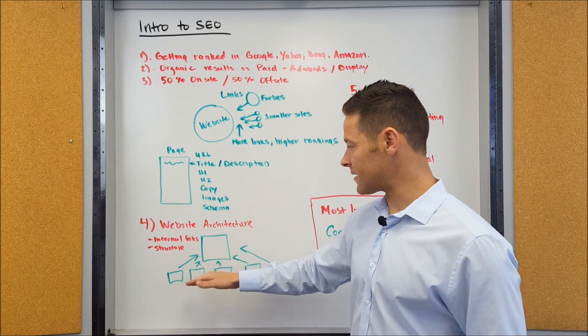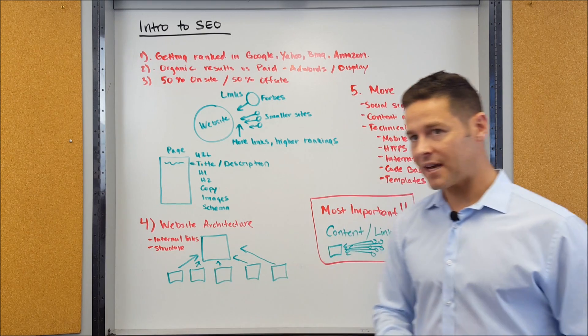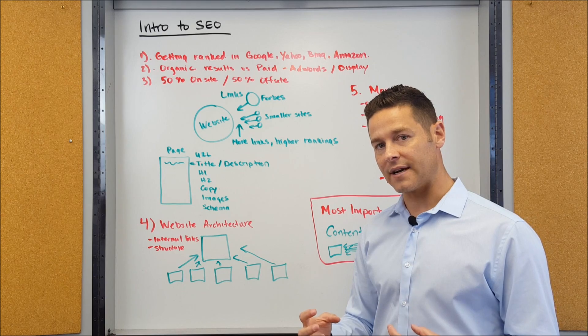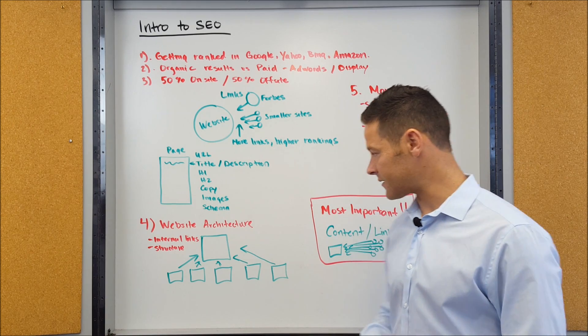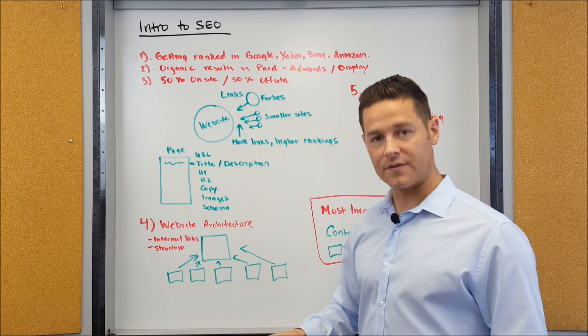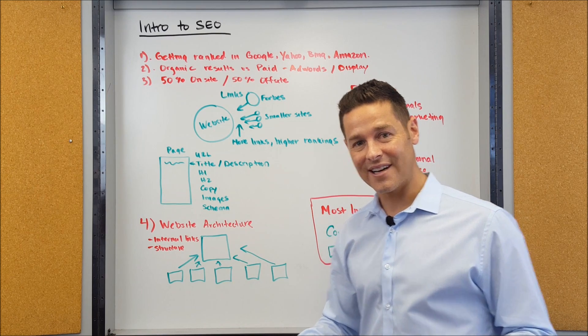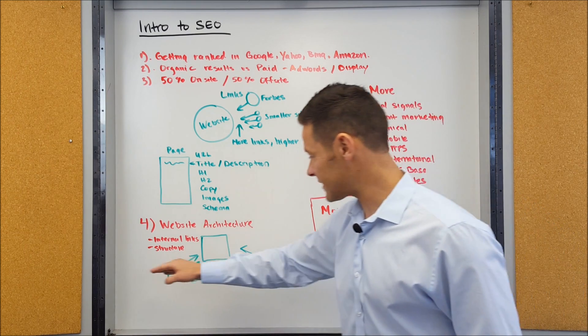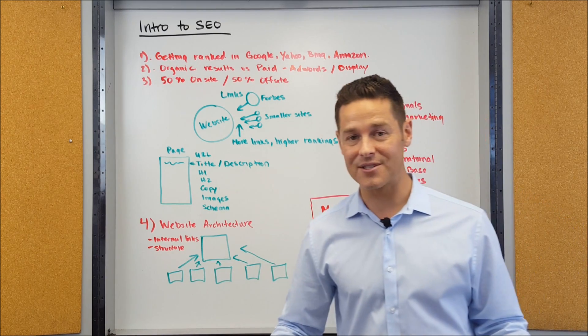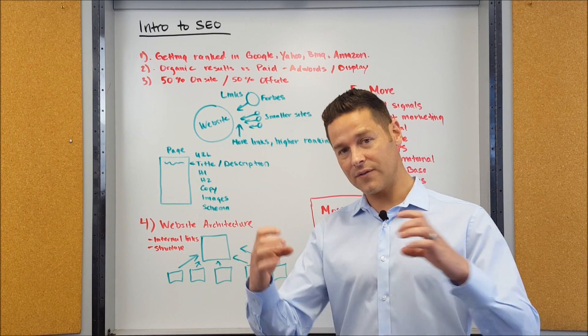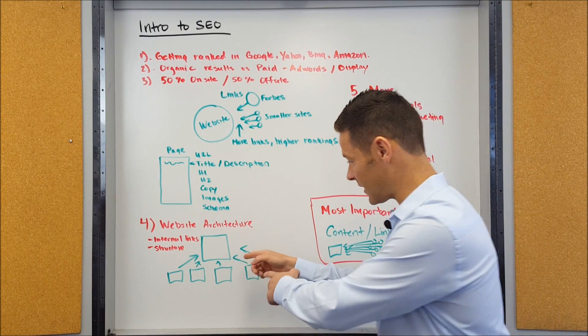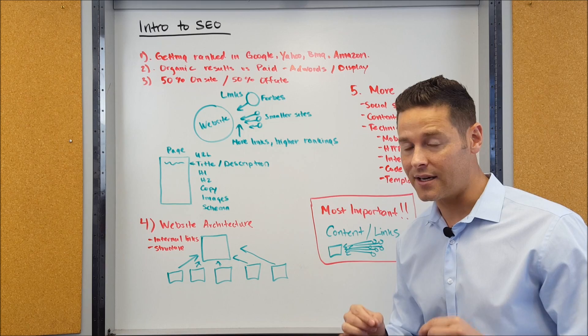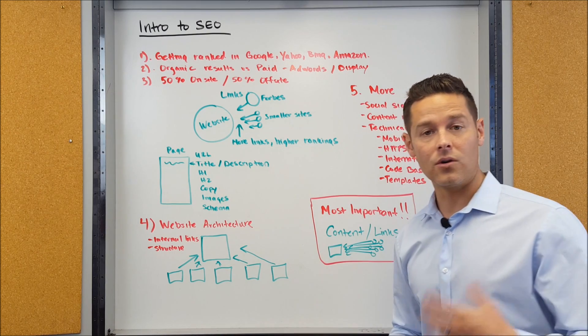Now, there's something else called website architecture, and what that means is the way that you basically format your website from a technical perspective. An example of that would be internal linking. So if this is a really important page on your site, if you link to that page a lot of times from other pages on your site, then all of those internal links to this page are going to be a signal to Google that that's an important page on your site and you should rank it higher.